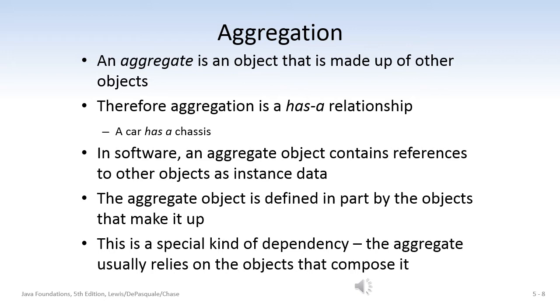Here's a new concept, aggregation. An aggregate is an object that is made up of other objects. Therefore, aggregation has a has-a relationship, as in a car has a chassis. So a car could be an object, and a chassis could be an object, and a car has a chassis. An aggregate object contains references to other objects as instance data, and I'm going to show you a specific example in a few seconds. The aggregate object is defined in part by the objects that make it up. This is a special kind of dependency, and the aggregate usually relies on the objects that compose it.